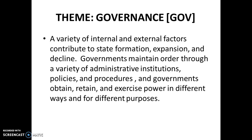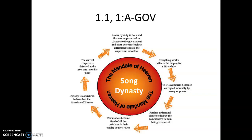We start with governance, structured around the concept of PIECES. In governance, we're looking at state formation, expansion, and decline — how governments maintain order and how they exercise power. For 1.1a, we're looking at developments in East Asia, specifically the Song Dynasty and the Mandate of Heaven. Confucianism and imperial bureaucracy are key traditions. The Mandate of Heaven is about how dynasties come to power and slowly lose it — when they lose power, they've lost the Mandate of Heaven.